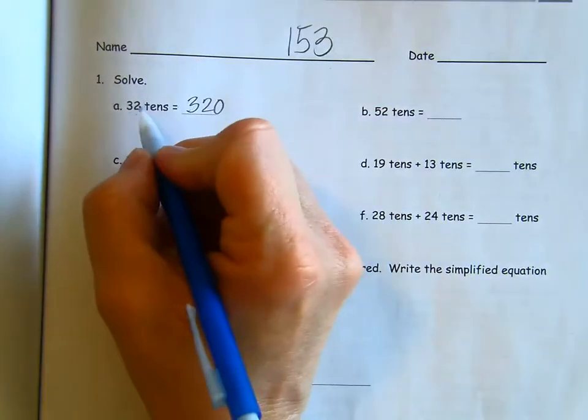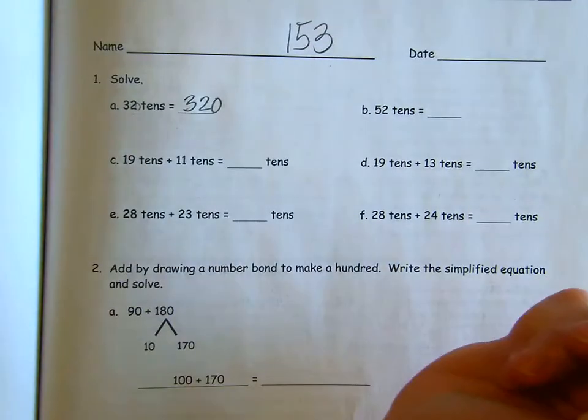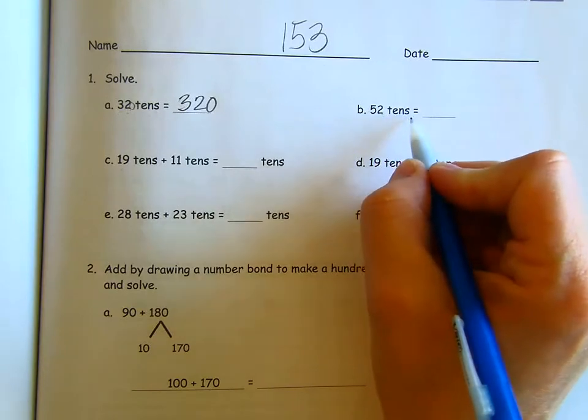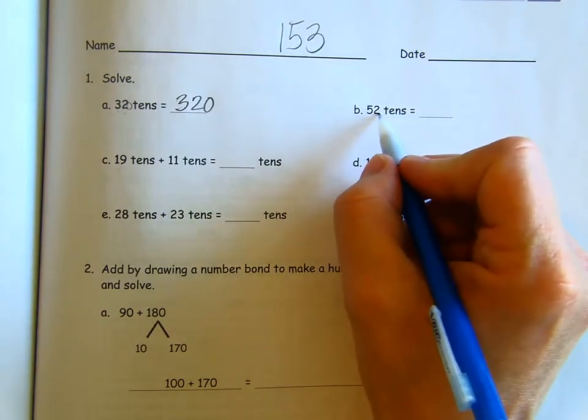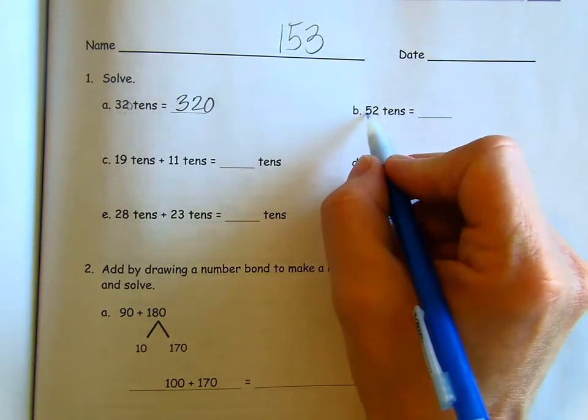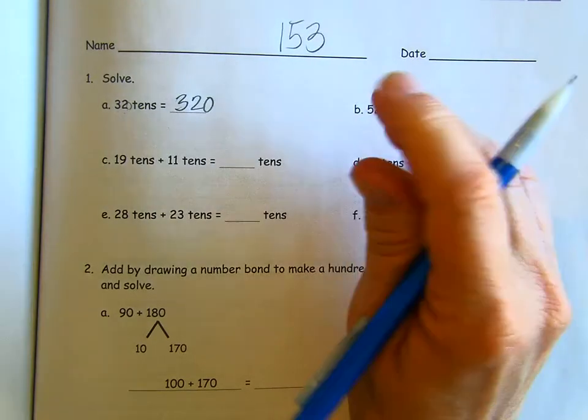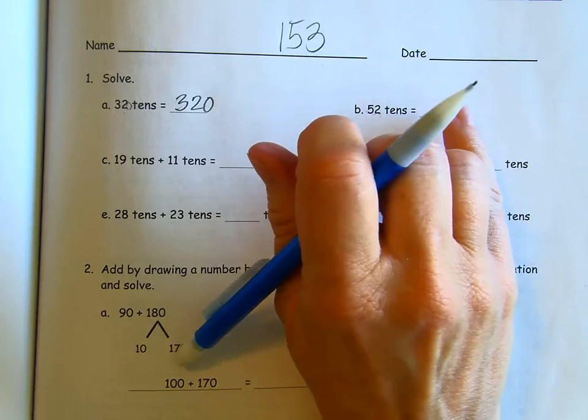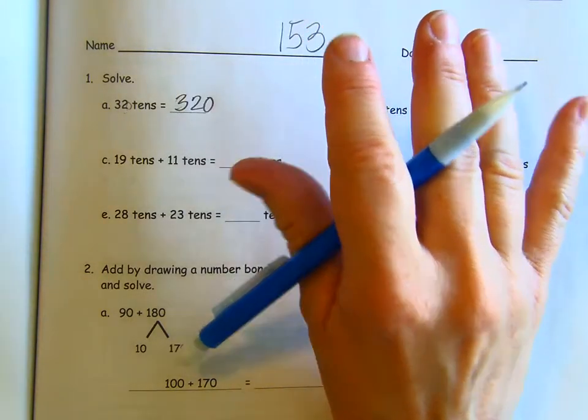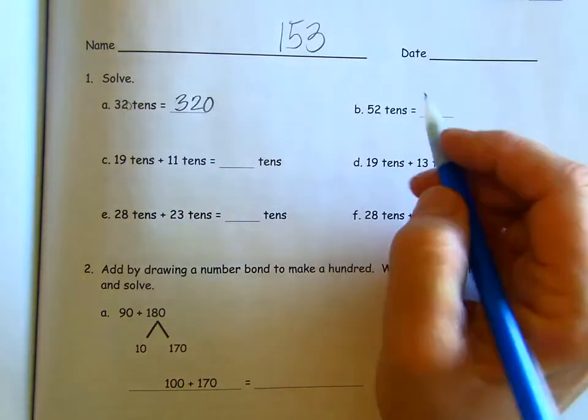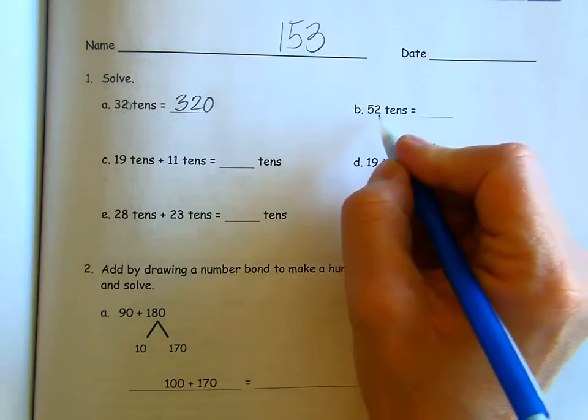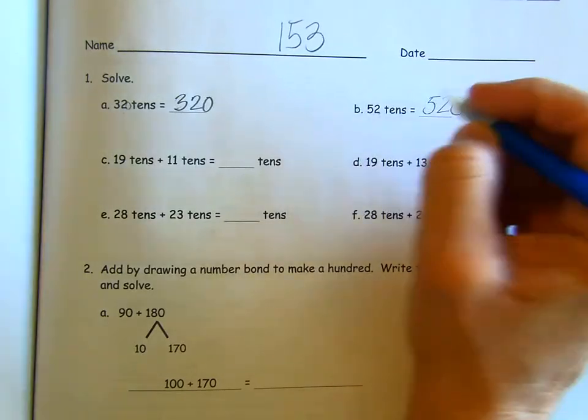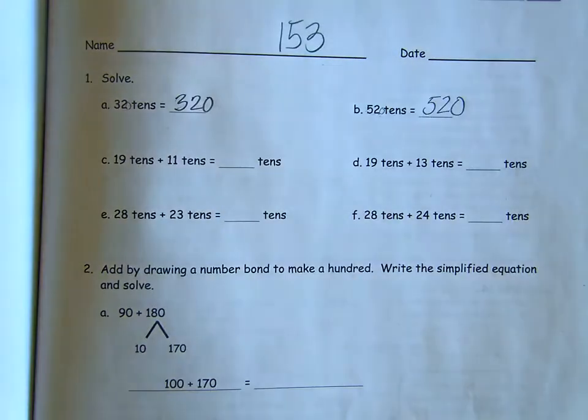It's kind of like just putting a zero at the end. Here we have 52 10s. So again, that two 10s, that's 20. But we have 50. Every group of 10 is 100. So we have five groups of 10. So we have 500 and then the two extra 10s. 520. And again, it's like putting a little zero right there at the end.